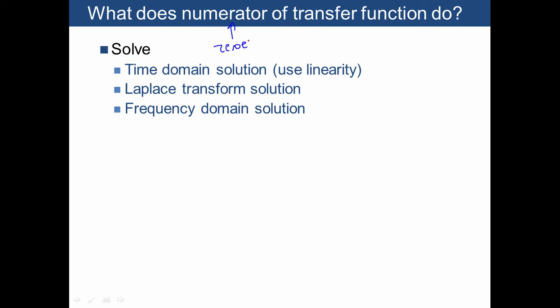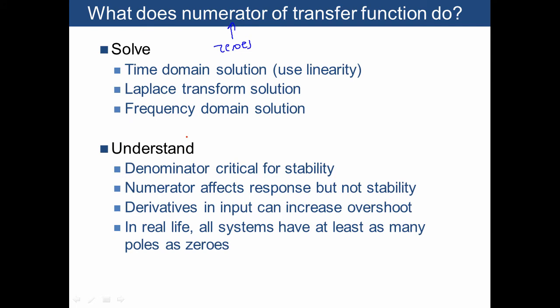Zeros are the roots of the numerator of the transfer function, and in fact, we already know how to solve for what their effect is, and we'll review those quickly today. Those include the time domain solution, the Laplace transform solution, as well as frequency domain. What's more important, though, is to understand the effect of zeros, where we said the denominator, the poles, in other words, affect the stability of the system. And what the zeros do is we're going to show how they affect the response of the system without affecting the stability. And in fact, you can think of zeros as just how many derivatives of the input you have, and we'll show that they can increase the overshoot in the system.